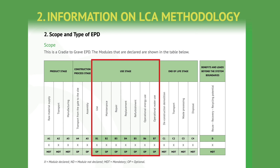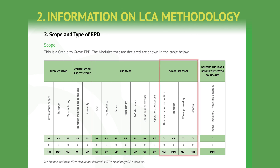Use of the product is covered by modules B1 to B7, in this order: the use, maintenance, repair, replacement, and refurbishment, together with operational energy use and operational water use. End of life is covered by four modules: C1, which is deconstruction and demolition; C2, which is the transport to a disposal facility; C3, which is waste processing for reuse, recovery, or recycling; and C4, which covers disposal.